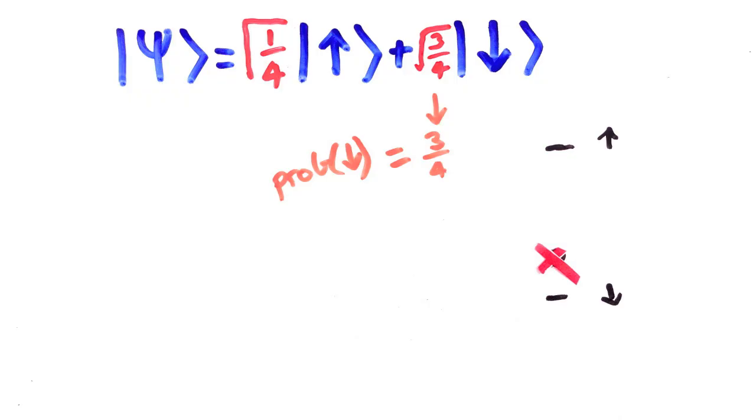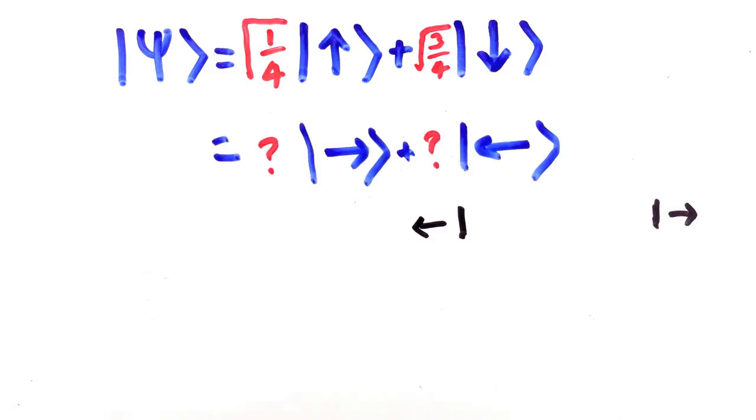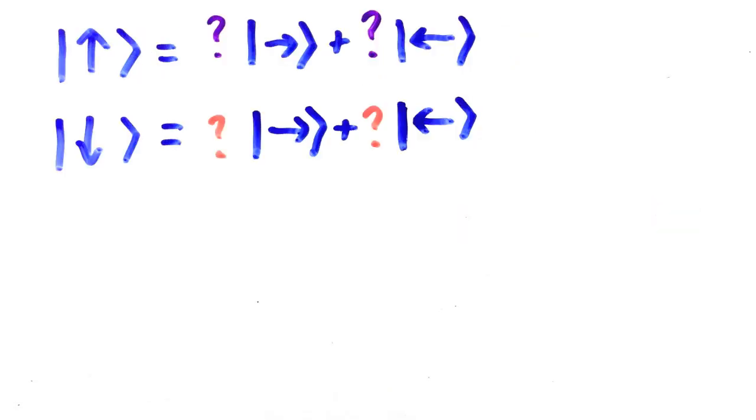But what about if I flip the machine on its side to measure the left rightness? In quantum mechanics, if you tell me the wave function in terms of up and down, I should be able to figure out what the wave function is in terms of left and right. To be able to do that, we just need to know how to convert up and down to left and right. But how?